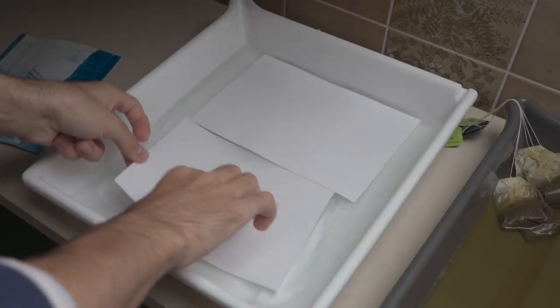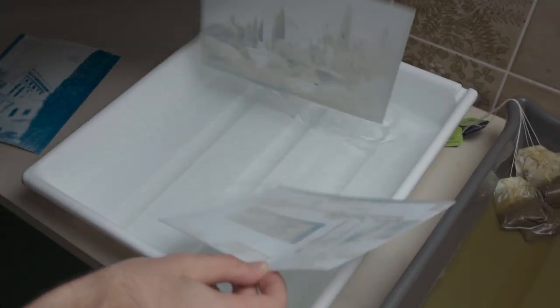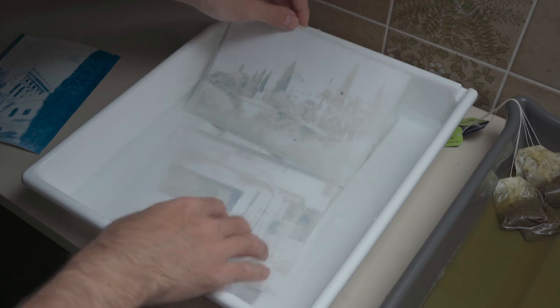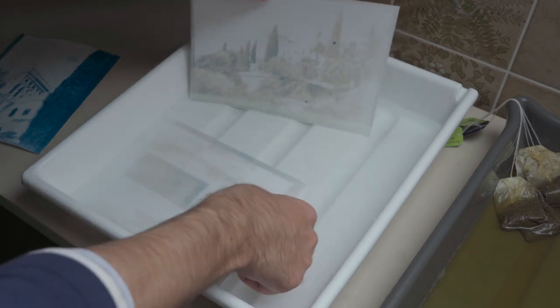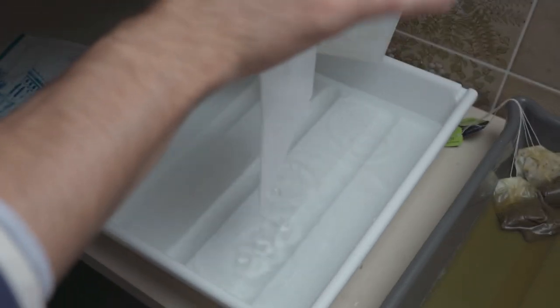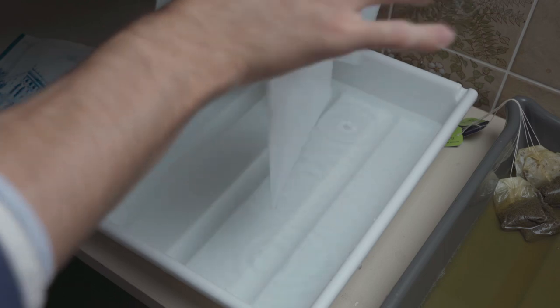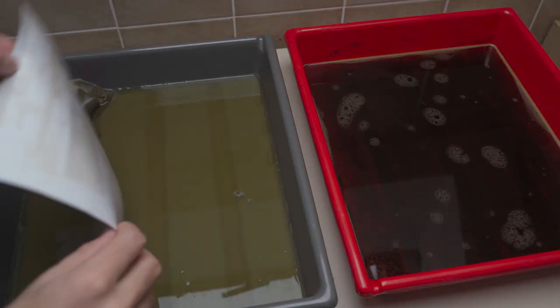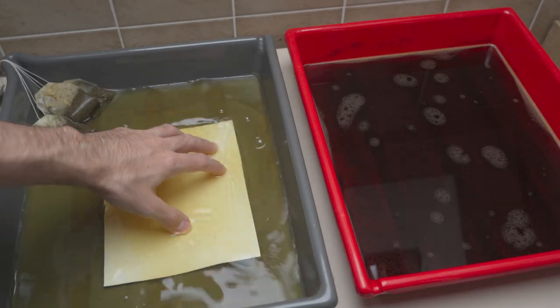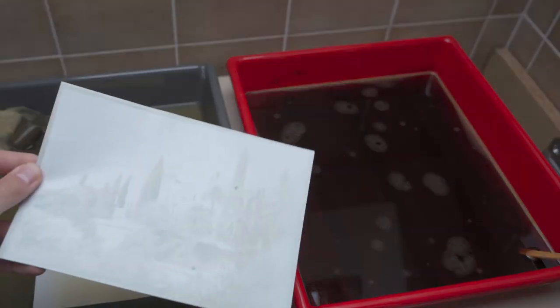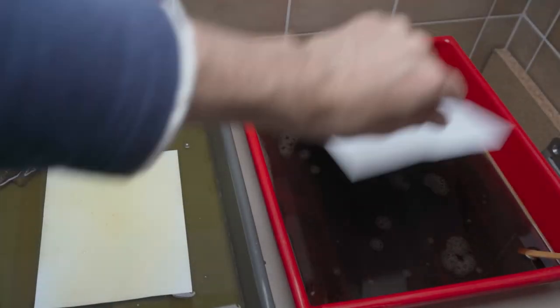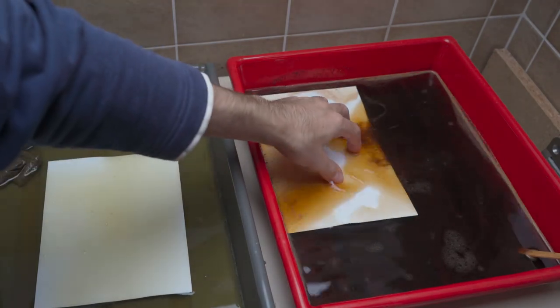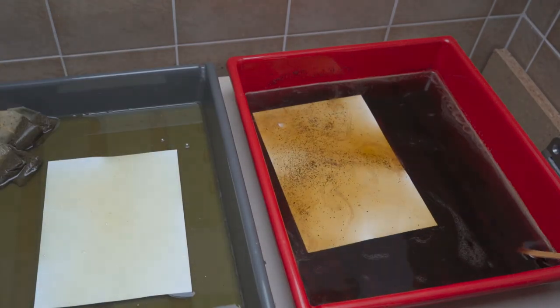After three to five minutes of bleaching it is time to submerge the prints in either coffee or tea depending on the color you want to achieve. After letting them sit for around an hour I rinse them in water.